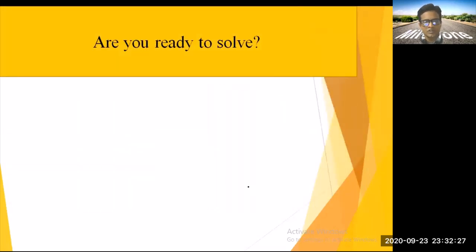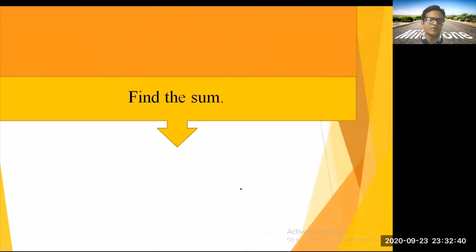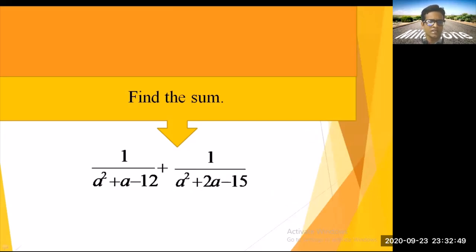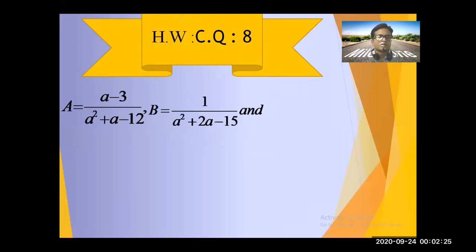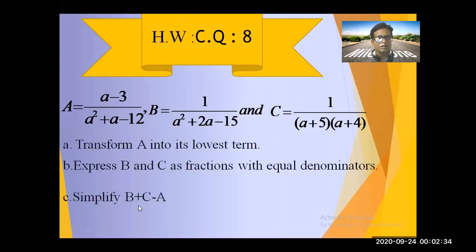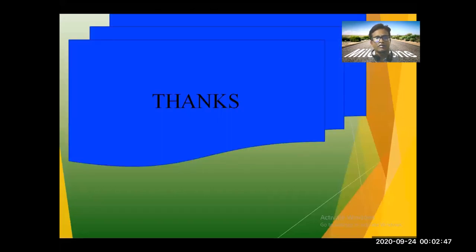Now I will give you a problem to solve: find the sum of 1/(a² + a - 12) and 1/(a² + 2a - 15). First find the factors of both expressions, then find the LCM, then simplify. Also solve CQ Number 8 and send it to your subject teacher. If you have any problems, ask in Zoom class. Thank you for watching this video.